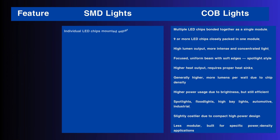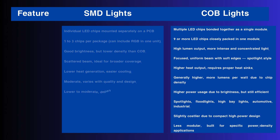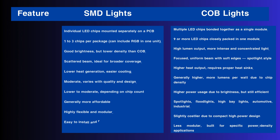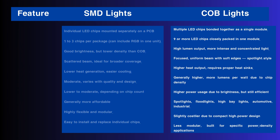Let's discuss SMD light features. Individual LED chips mounted separately on a PCB — one to three chips per package. Can include RGB in one unit. Good brightness, but lower density than COB. Scattered beam, ideal for broader coverage. Lower heat generation, easier cooling. Moderate efficiency, varies with quality and design. Lower to moderate power, depending on chip count. Generally more affordable. Highly flexible and modular. Easy to install and replace individual chips.